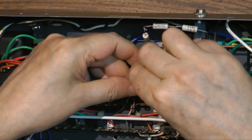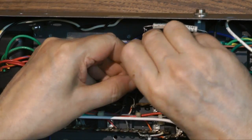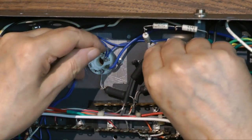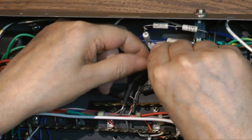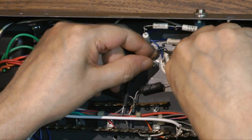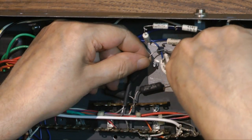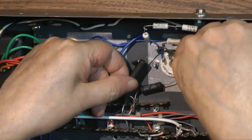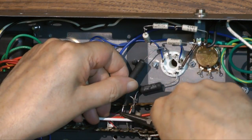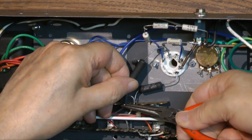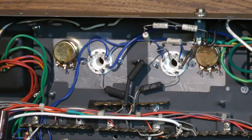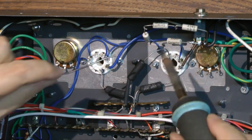These are one ohm cathode resistors that I'm going to be using to measure plate current when I adjust the bias. I originally put them to the same ground point but I changed that later due to high frequency instability.